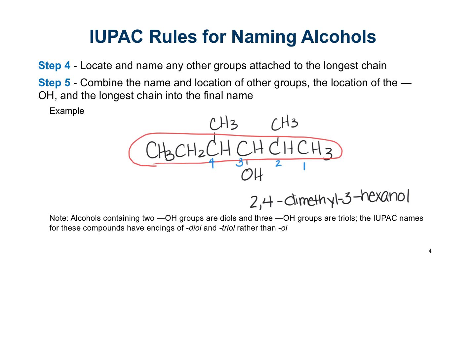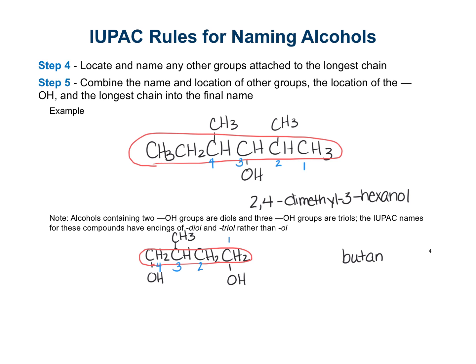An example would be CH2OH-CH(CH3)-CH2-CH2OH. The longest carbon chain is four carbons, so butane would be our base name. We have OH groups attached - we can count one, two, three, four in one direction or one, two, three, four in the other. Since the two alcohol groups tie, we want to choose the way that gives the lowest number for the substituent as well, so we go with the direction that places the substituent at the lower number.